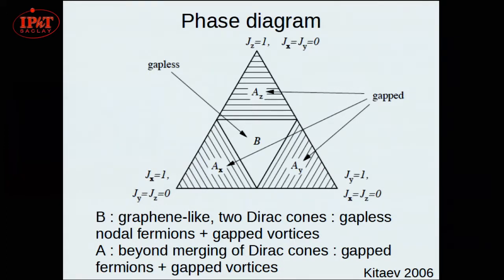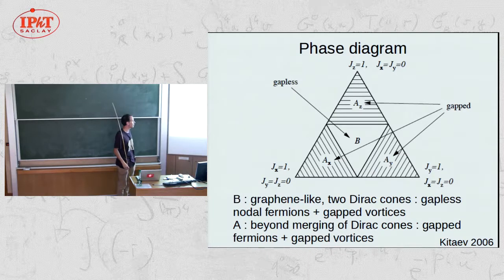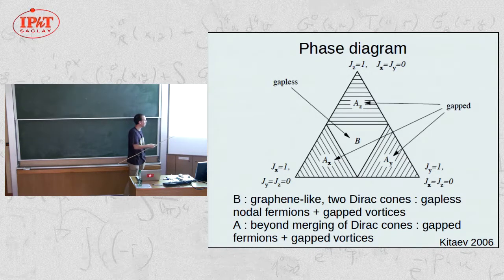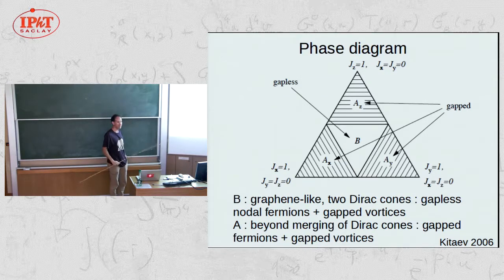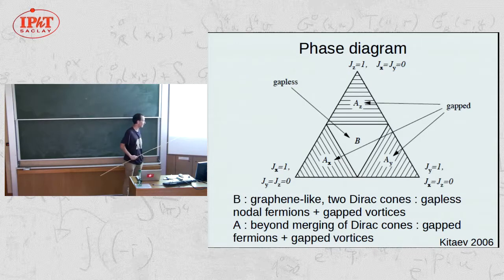The phase diagram depends on J_x, J_y, J_z. There are two phases: a gapless phase near the isotropic coupling, and a gapped phase when one exchange coupling is much larger than the other two. The gapless B phase features Dirac cones (gapless fermions) plus gapped vortex excitations. In the anisotropic A phase, the Dirac cones become gapped (massive Dirac particles) with still-gapped vortices. This is closely related to the problem of fermions hopping on the honeycomb lattice, as studied in the context of graphene.